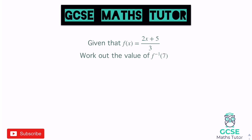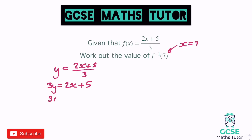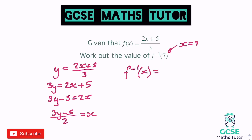Given that f of x is 2x plus 5 over 3, work out the inverse function of f when we put 7 in. Once we get the inverse function, we're going to sub in x equals 7. But let's find the inverse function first. So y equals 2x plus 5 over 3 — times both sides by 3: 3y equals 2x plus 5. Subtract 5 from both sides: 3y minus 5 equals 2x. Divide by 2: 3y minus 5 all over 2 equals x. So the inverse function of f equals 3x minus 5 over 2.